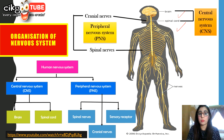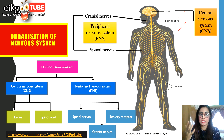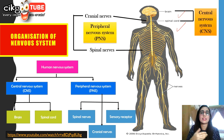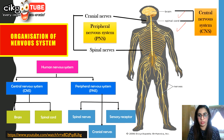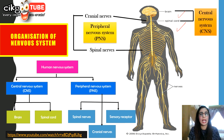There are also 31 pairs of spinal nerves from the spinal cord to the sensory organs and effectors — for example, from the thorax, abdomen, and limbs. Basically, cranial nerves send nerve impulses from and to the brain, and spinal nerves send nerve impulses from and to the spinal cord. So note the difference between the central nervous system and the peripheral nervous system, which includes both cranial nerves and spinal nerves.